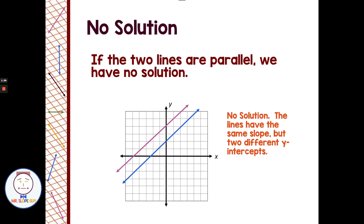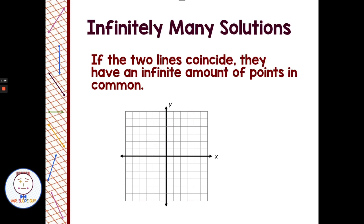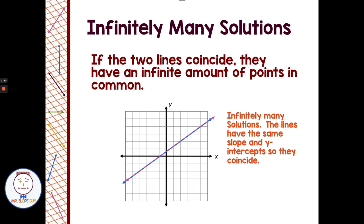Parallel lines have no points in common and no points of intersection. The third thing that could happen is we'd have infinitely many solutions if the two lines coincide, meaning they have an infinite amount of points in common. If we graph one line and our second graph makes the same line on top of it, we'd have an infinite amount of solutions.